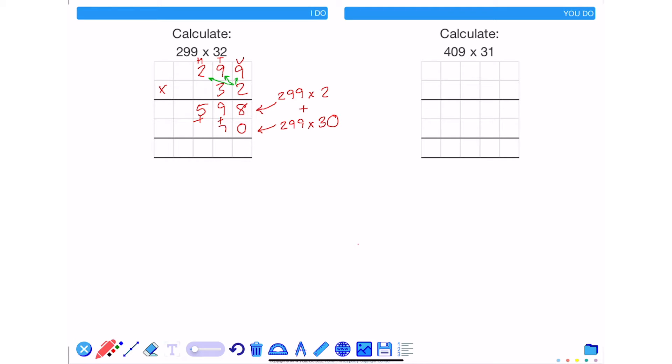3 times by 9 is 27. 3 times by 9 is 27, add on the 2 is 29. 3 times by 2 is 6, add on the 2 is 8. So the answer to 299 times by 30 is 8,970.